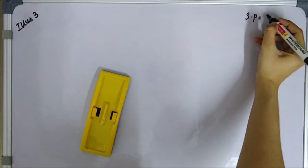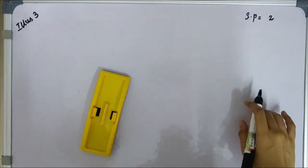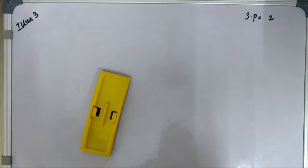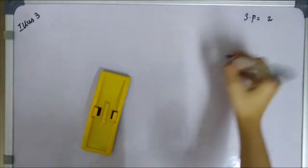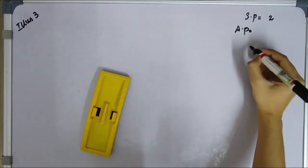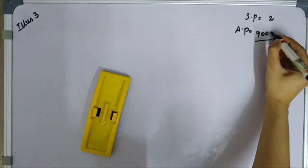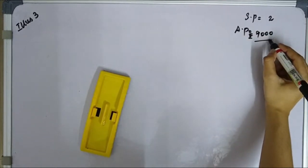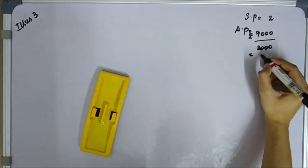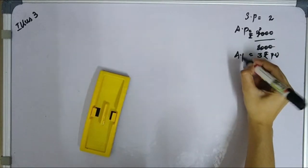The standard price is 2 rupees per unit. Now we are finding the actual price. Total quantity we purchase is 3000 units, total value is 9000 rupees. So actual price equals total material value divided by total units purchased: 9000 divided by 3000 equals 3 rupees per unit. So 3 rupees per unit is your actual price.